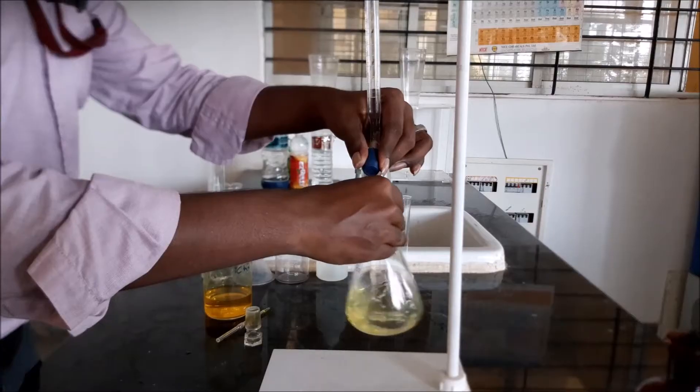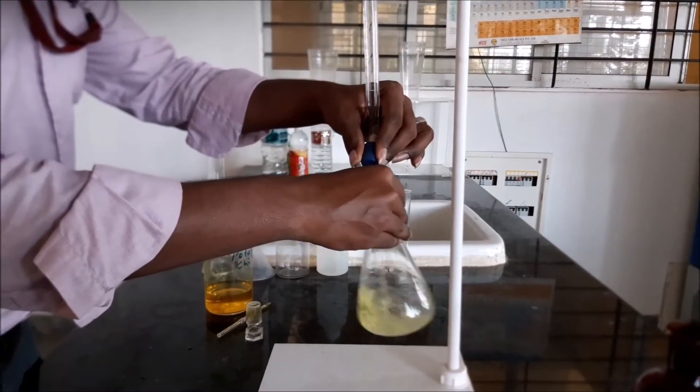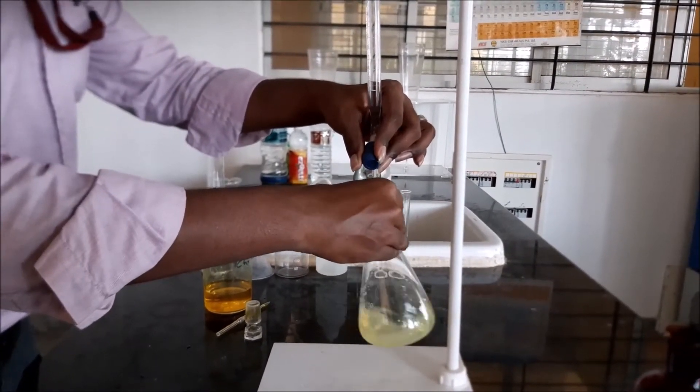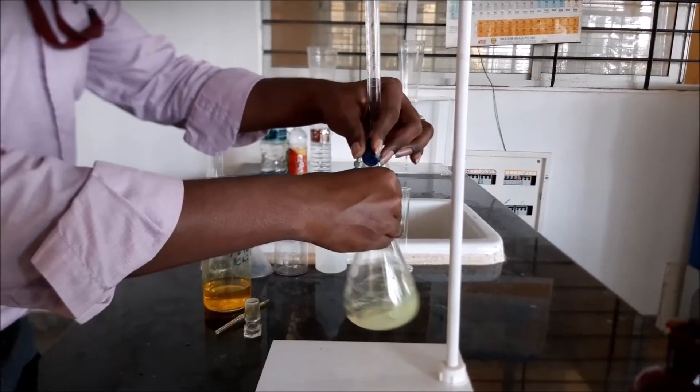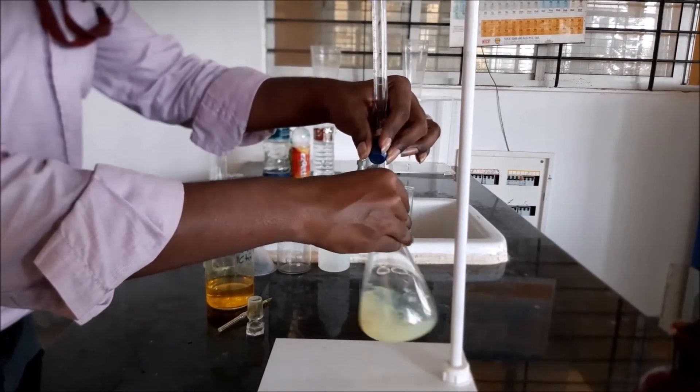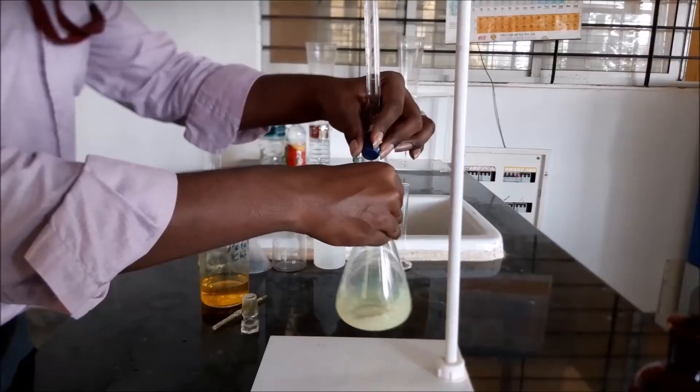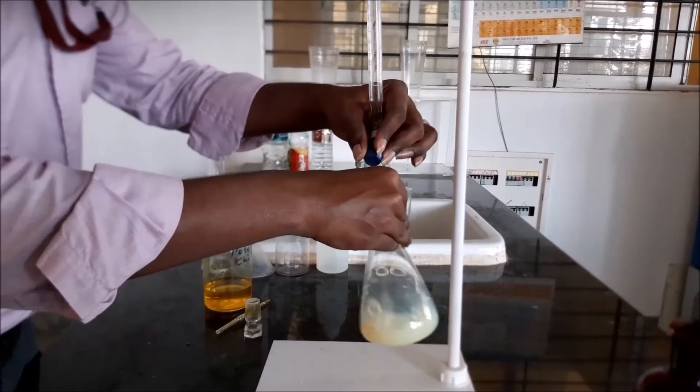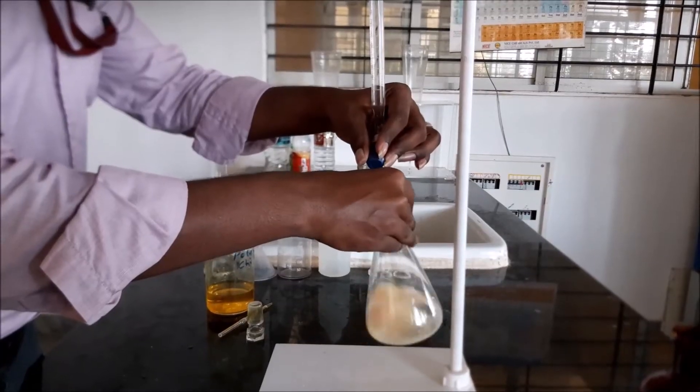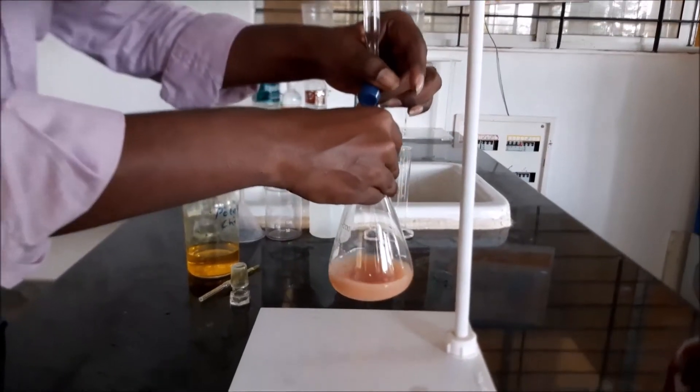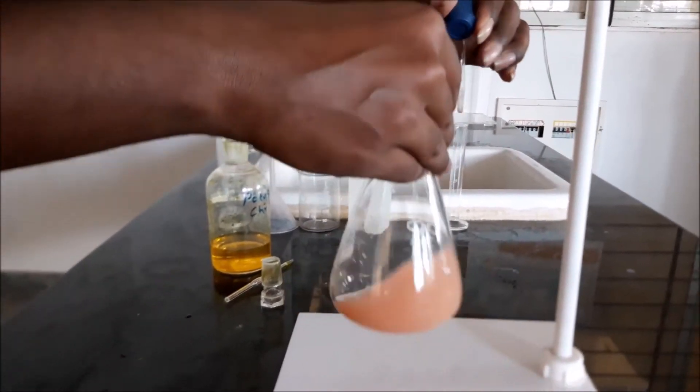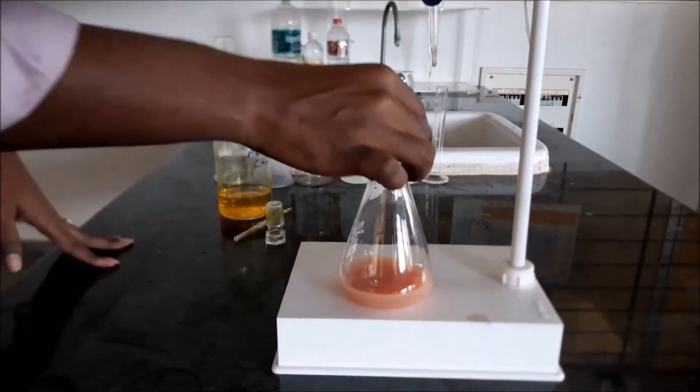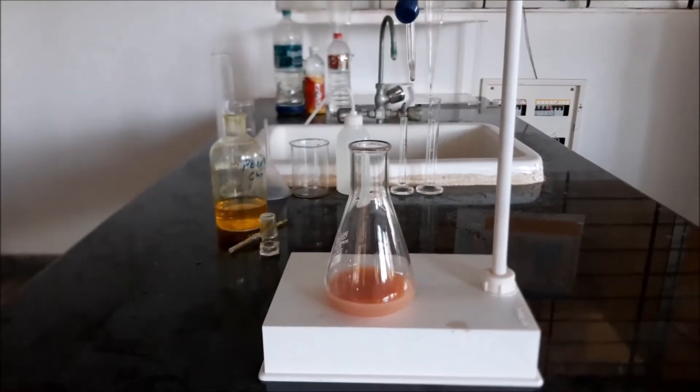If there is presence of chloride, you can see the change in color. As you can see, the pale yellow color has changed to brick red color. This indicates that there is presence of chloride in the sample.